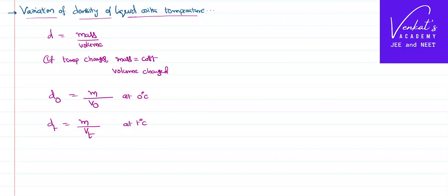How are these volumes related for a given liquid? I can write a formula, gamma of the liquid as change in the volume by original volume per 1 degree centigrade rise in temperature. That implies, I can write VT minus V0 as gamma V0 into T. VT can be V0 plus gamma V0 into T. That is V0 of 1 plus gamma T.